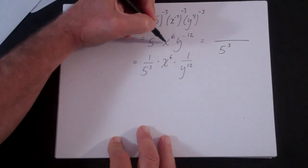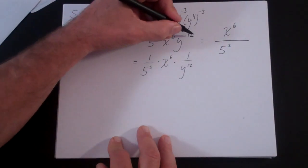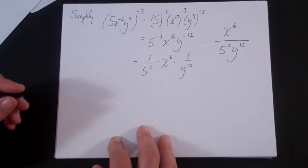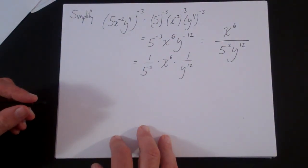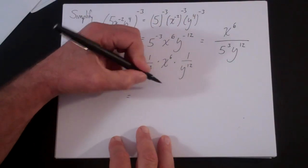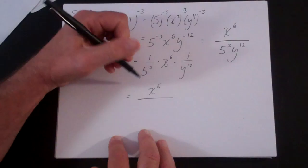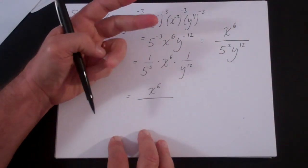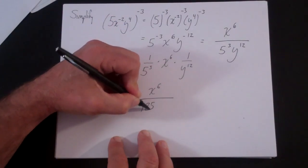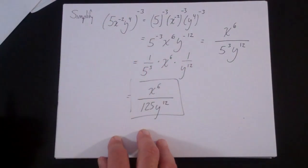So: x to the sixth is positive, so it stays in the numerator. The 5 to the third and y to the twelfth are in the denominator. Five to the third is 5 times 5 times 5: 5 times 5 is 25, times 5 is 125. So your final answer is x to the sixth over 125 y to the twelfth.